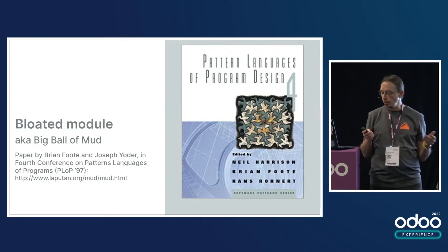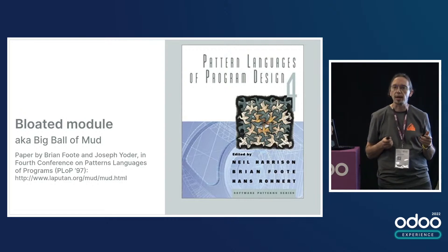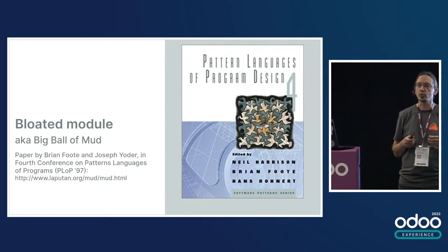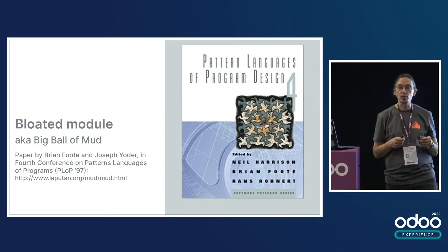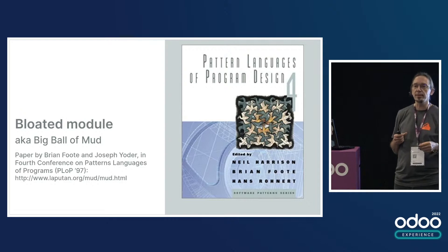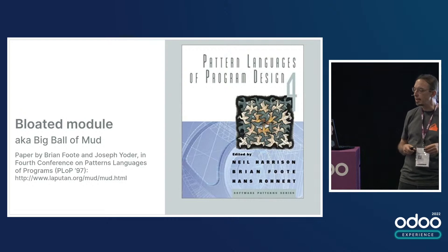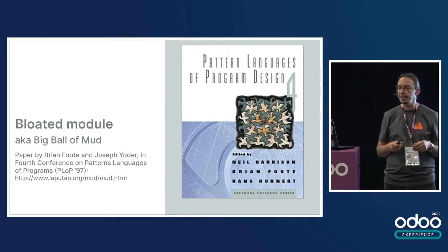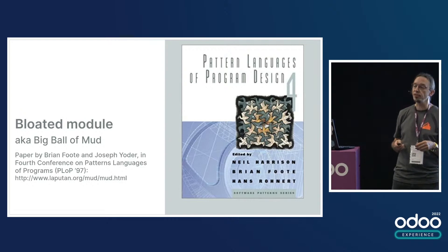The first code smell I've seen a lot in Odoo source code is bloated module. It's also known as a big bowl of mud. The term was coined in 1997 at one of the PLOP conferences. These are available at Addison Wesley's. You may want to read these books — they are fairly old but still very interesting.